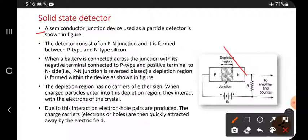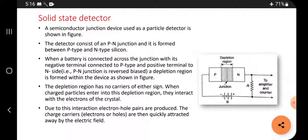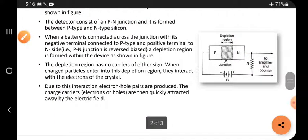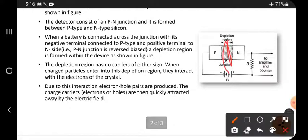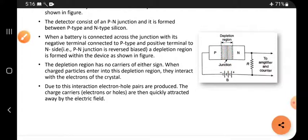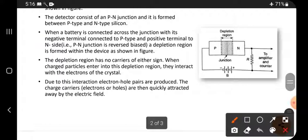The detector consists of a PN junction and it is formed between P type and N type silicon. It is a junction that forms between P and N.